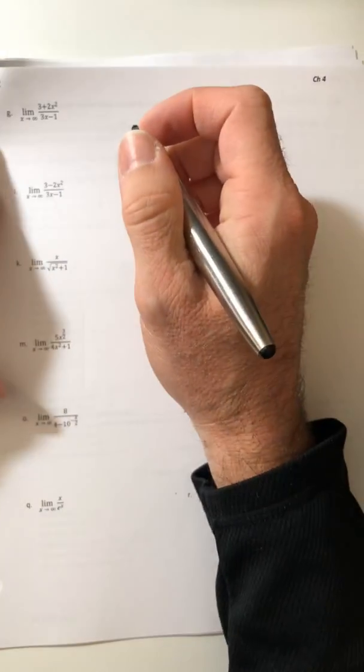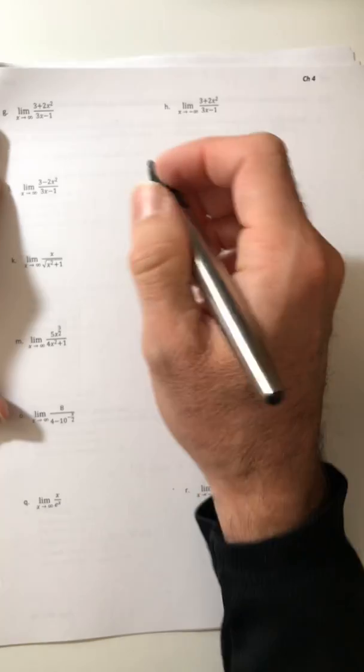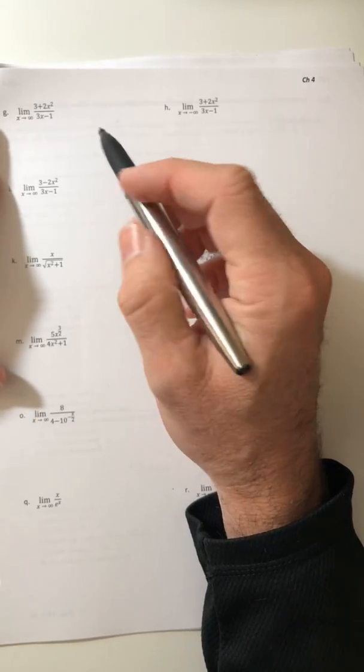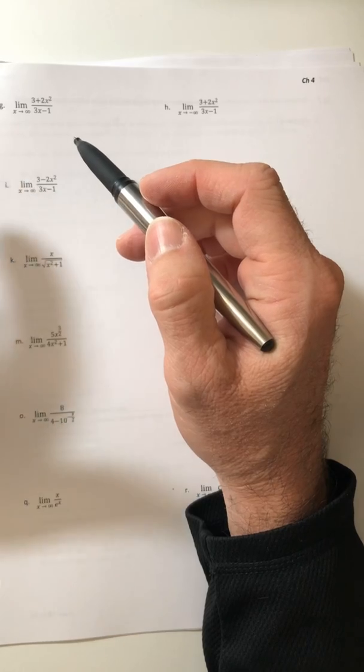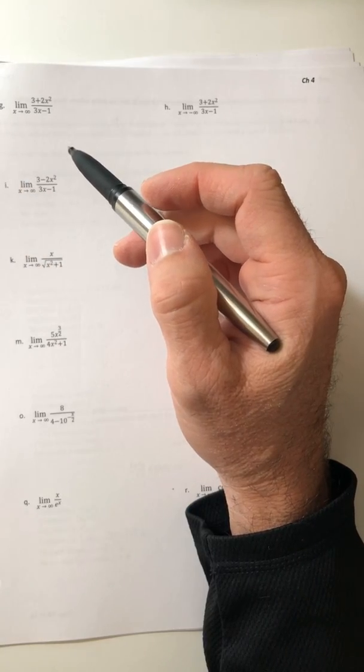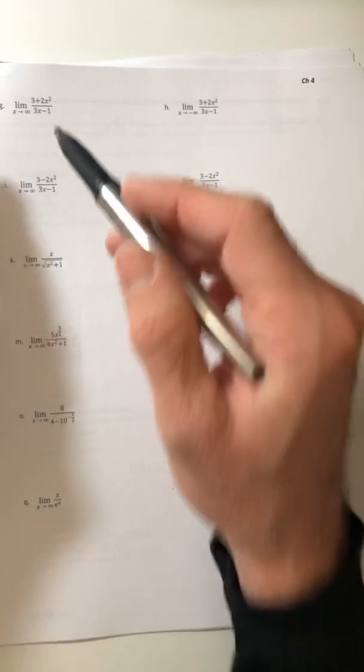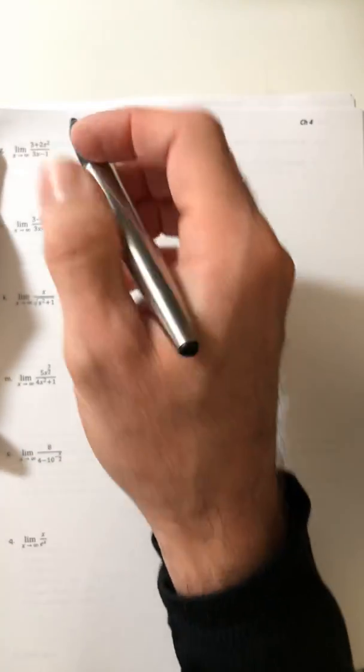All right, moving on to part three of limits at infinity. So we saw how to evaluate them with those first two guidelines when the denominator had the bigger degree or when the degrees were equal. Now let's look at it when we've got the numerator having a bigger degree.